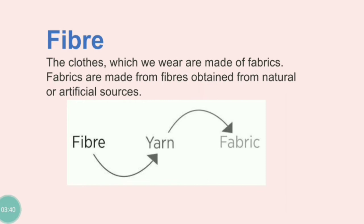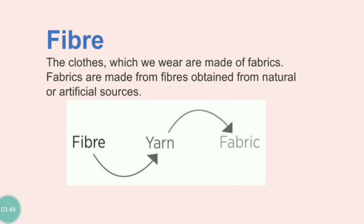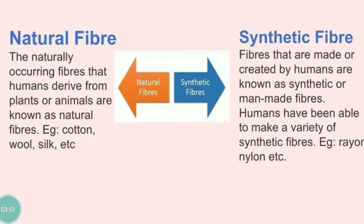Fibers could be either natural or artificial. If we talk about cotton, jute, and wool — all these are natural fibers. While we'll be talking about rayon, nylon, and polyester in this video — these are all synthetic or artificial fibers.